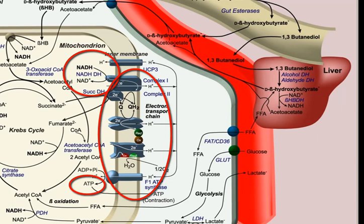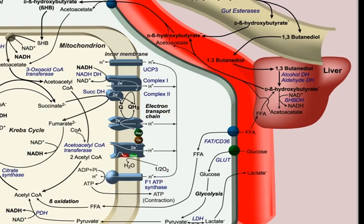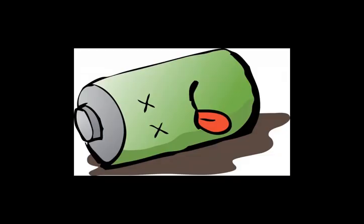By adding this NADH, a lot of things change in the mitochondria to make it more efficient. Once D-beta-hydroxybutyrate has been converted to acetoacetate, it has lost the extra NADH. D-beta-hydroxybutyrate is like a fully charged battery, and acetoacetate is like a dead battery.